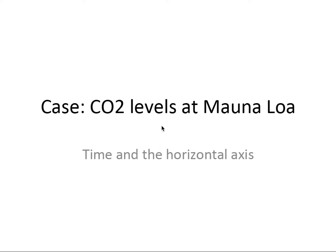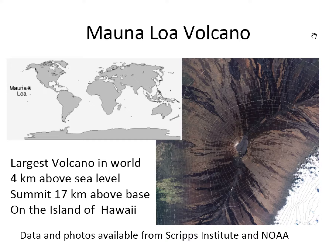Let's think about how to take data from the Mauna Loa Observatory, which is in Hawaii, and think about how we might display that data and what types of problems we might solve. Here's a picture of the Mauna Loa volcano. You can see it's in Hawaii — our largest volcano, four kilometers above sea level, with a summit actually 17 kilometers high. We're able to put a detector up there and take high-quality observations of CO2 in the atmosphere.